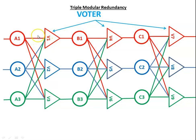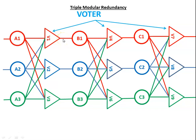Each voter is a circuit that has three inputs and one output. If two or more of the inputs are the same, then the output equals that input. So out of the three inputs to each voter, at least two must be correct for the output to be correct. If all three inputs are different, the output of the voter will be undefined. This design is called Triple Modular Redundancy.